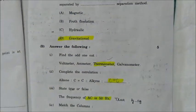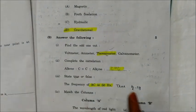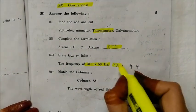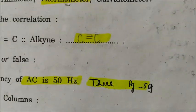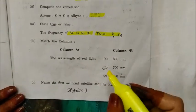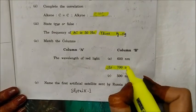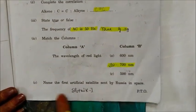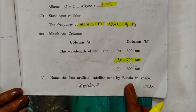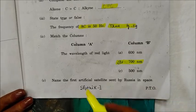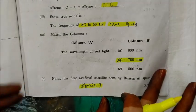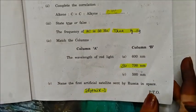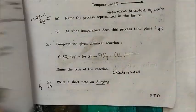The wavelength of red light is 700 nm. Name the first artificial satellite sent by Russia — that is Sputnik 1, or just Sputnik; both answers are acceptable.